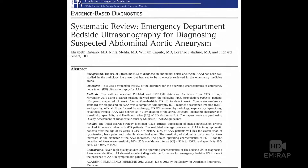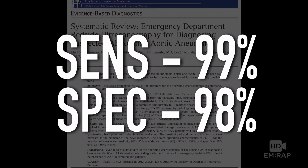So how good are we at doing this? A meta-analysis published in 2013 included seven studies with 655 patients and found that our sensitivity for diagnosing AAAs was 99% and our specificity was 98%. There is a caveat: they excluded patients in which they could not visualize the aorta. But this number in most studies was actually fairly small — less than 5%.